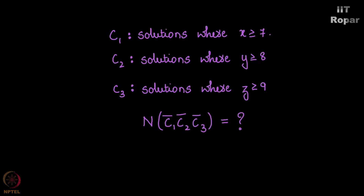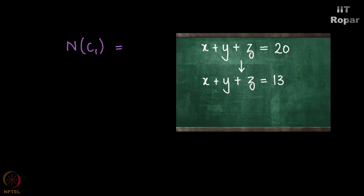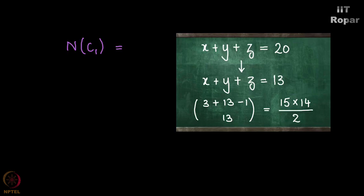C1 are those solutions where x is greater than or equal to 7. n of C1 is found by substituting x' = x - 7, reducing x plus y plus z equals 20 to x plus y plus z equals 13. The number of solutions for this is 3 plus 13 minus 1 choose 13, which is 15 choose 13, which is 15 into 14 by 2, which is 105.